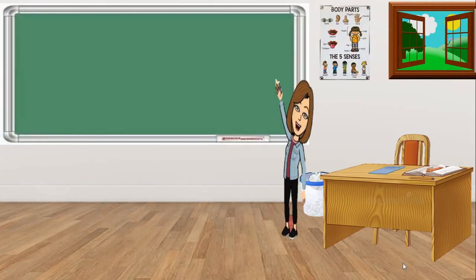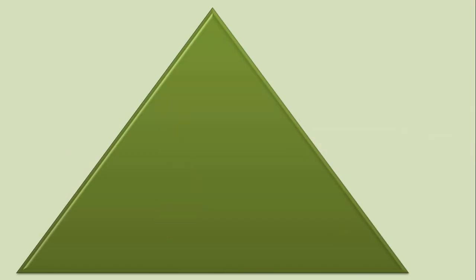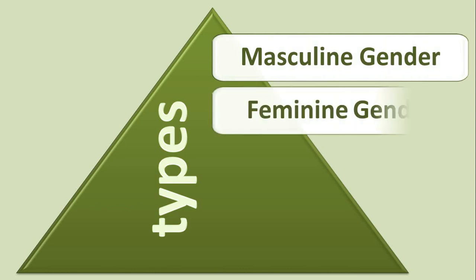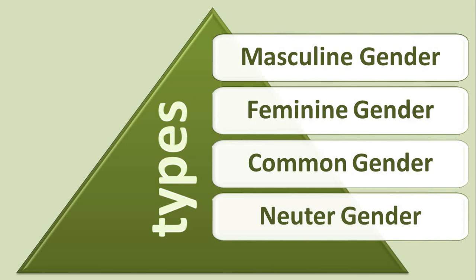Welcome back children. Let's recapitulate the topic noun gender. This topic you have already done, we are just going to revise it. Children, you know that nouns have been categorized into four types based on their gender: masculine gender, feminine gender, common gender, and neuter gender. Let's discuss them one by one.